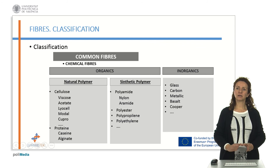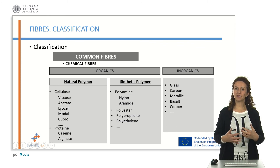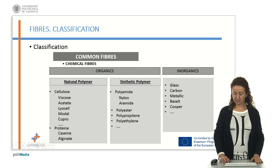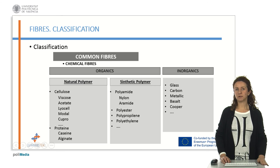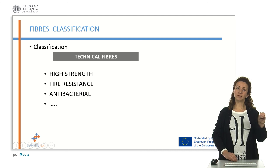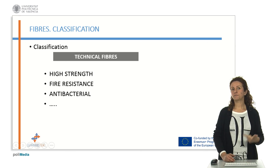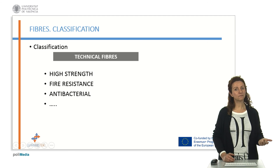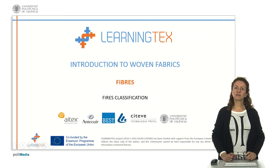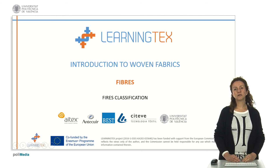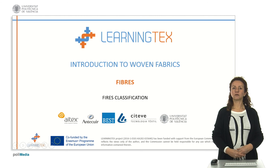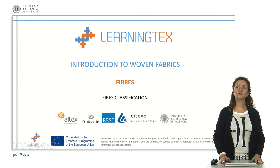All these fibres are not found as a fibre itself; we need to manipulate the polymer to obtain the fibre by a chemical spinning process. This has been focused on the classification of common fibres, but for technical fibres we can find fibres that give us high strength, fire resistance, antibacterial properties, and they would be classified depending on those properties. With this we have studied the classification of fibres, which is really important to attribute properties since many of them depend on the nature of the polymer. The properties will be studied in the next video. Thank you very much for your attention.